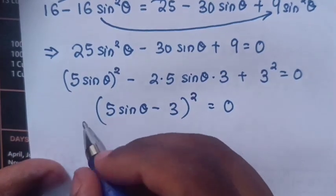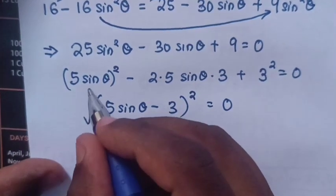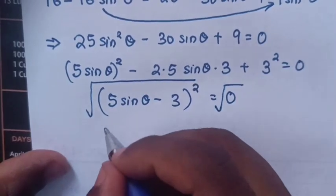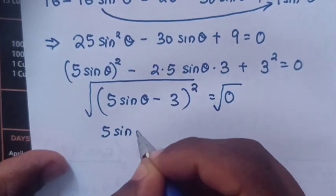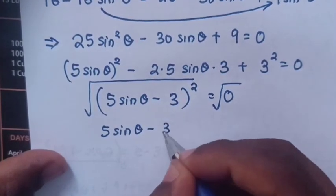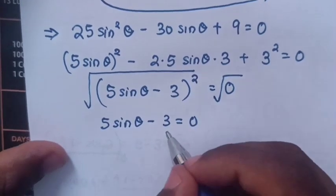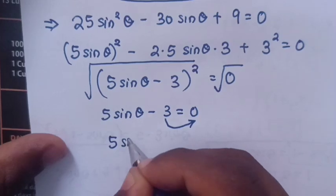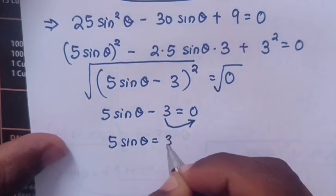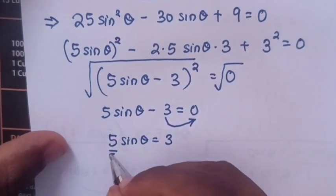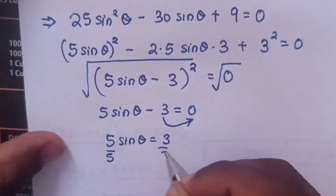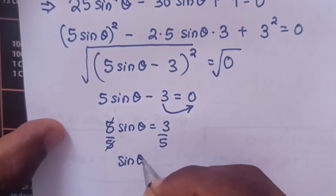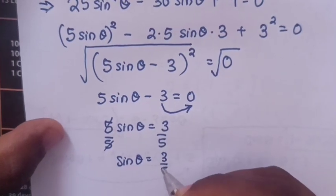We apply the square root on both sides: the square root cancels with the square, giving 5 sin θ − 3 = 0. Moving −3 to the right side: 5 sin θ = 3. Dividing both sides by 5: sin θ = 3/5.